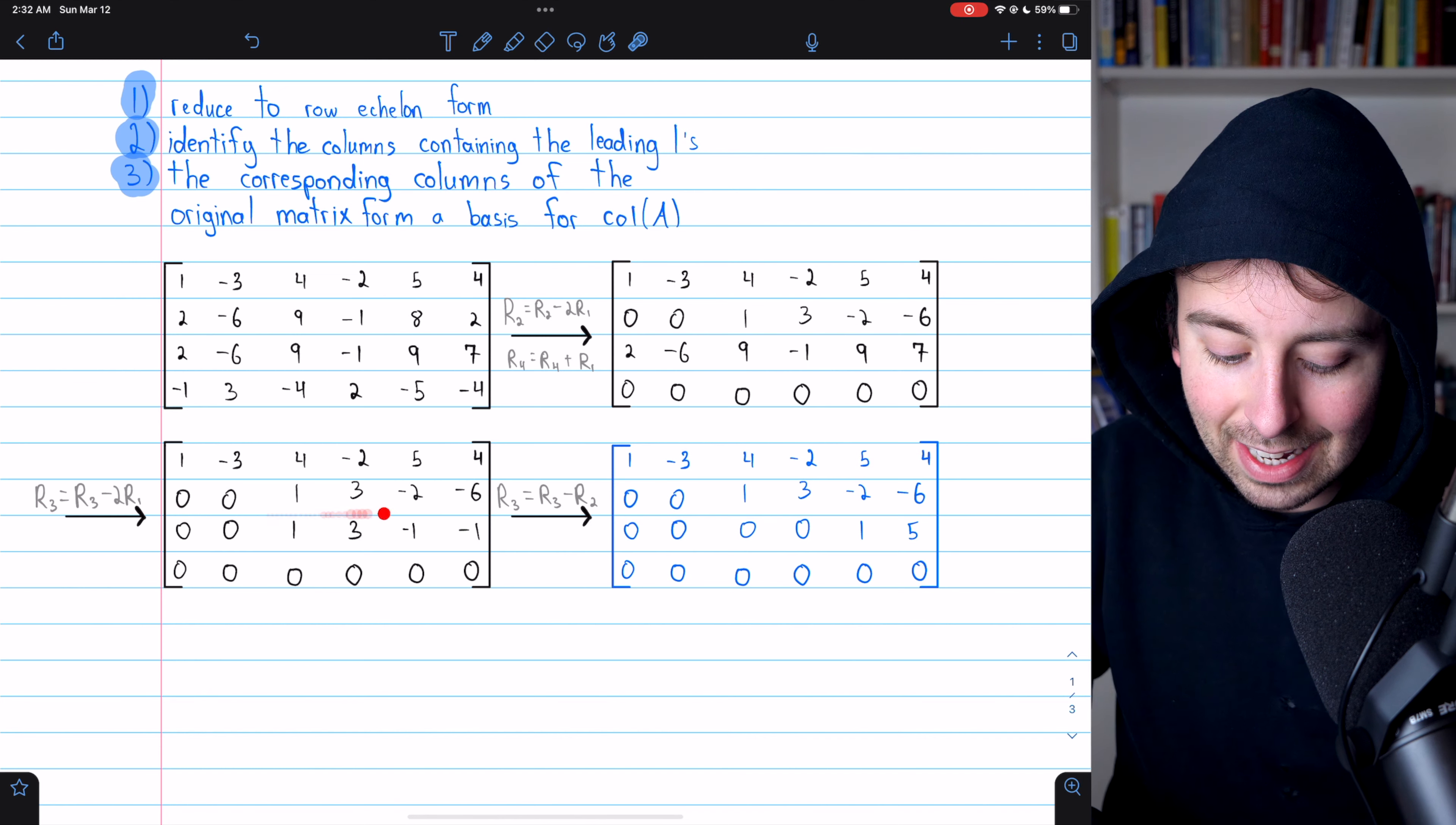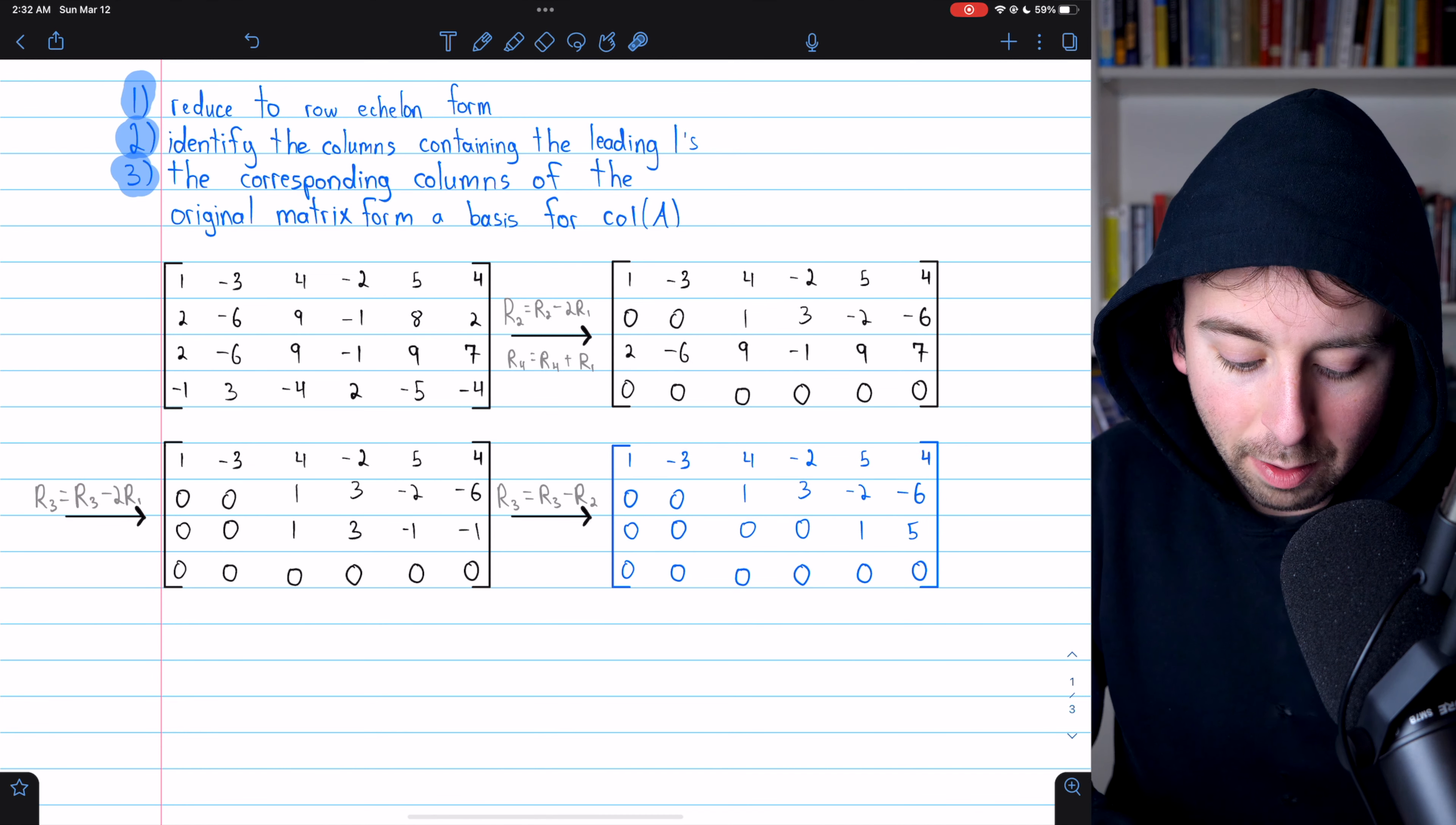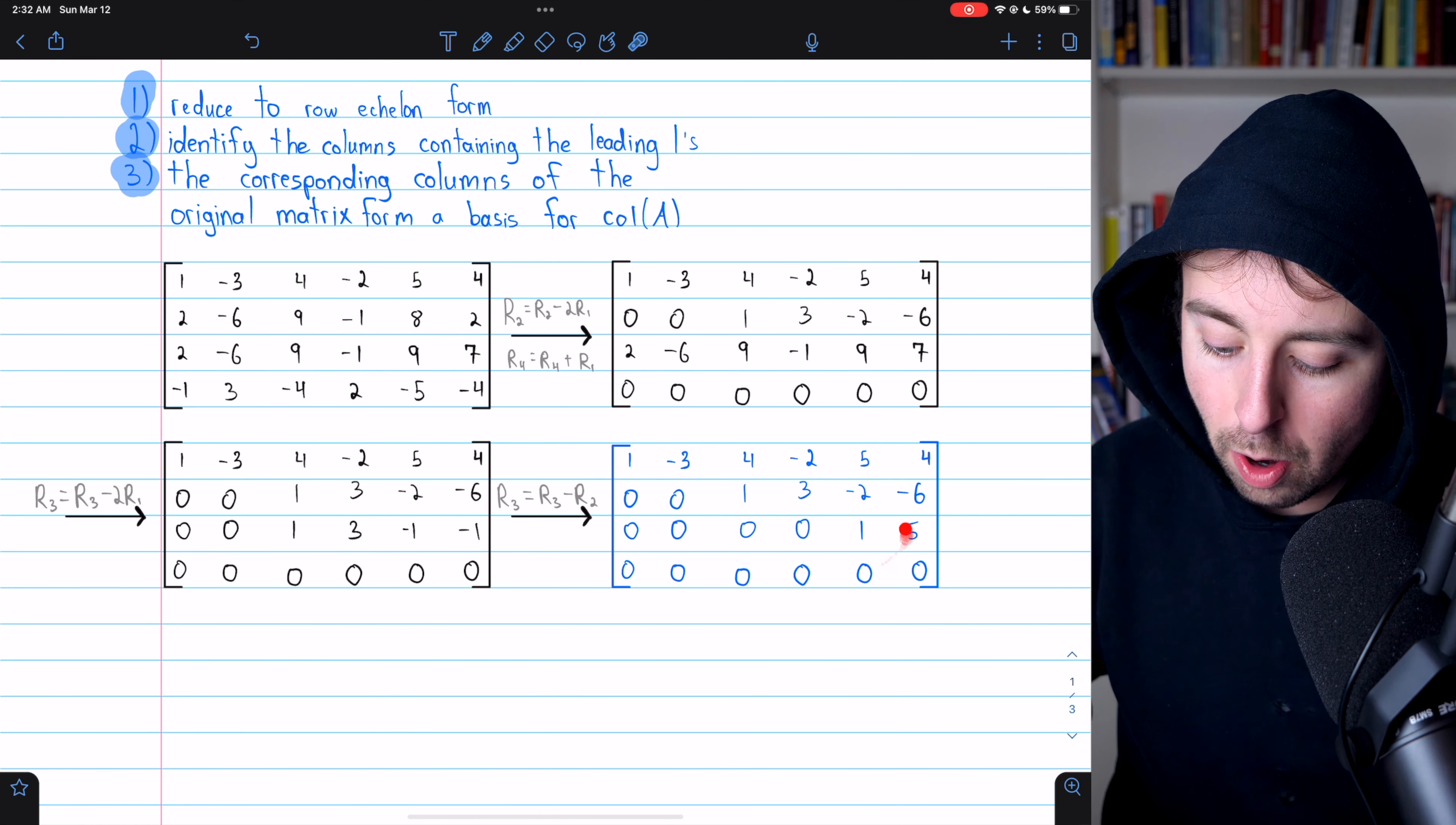So to go from here to here, we're subtracting two copies of row one from row three. And in the end, we get this row echelon form.